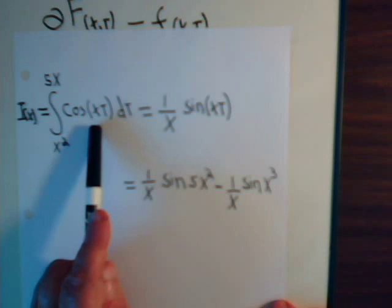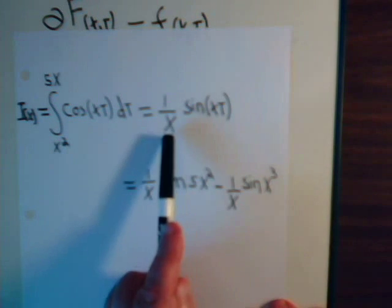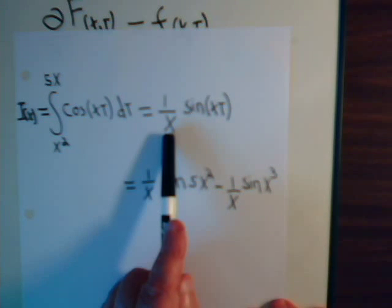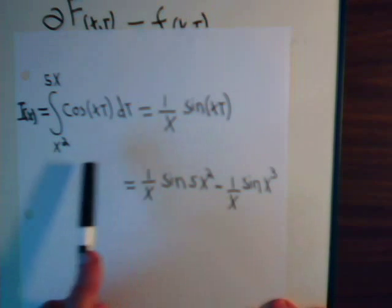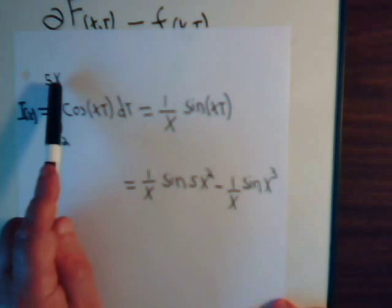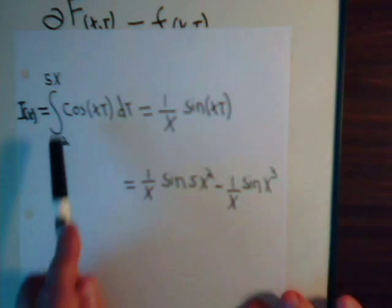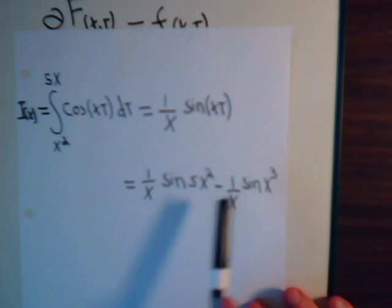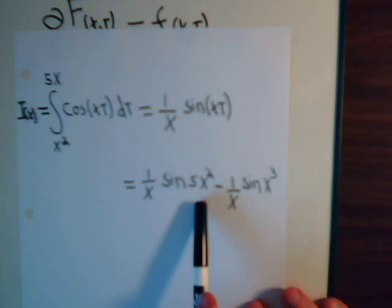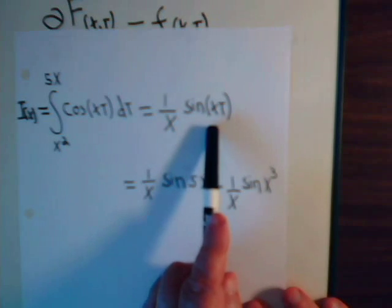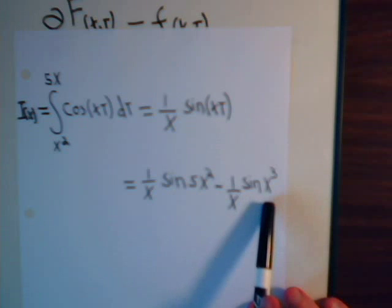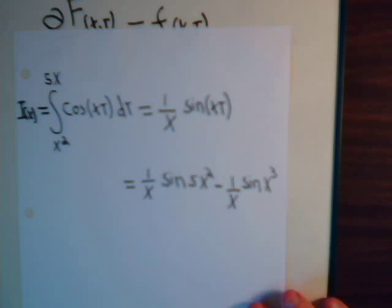We treat x as a constant when we integrate. This gives us one over x times the sine of xt. Now, the limits of t are not constants — they're some function of x. Here t equals 5x: putting 5x in we have 5x squared, then minus one over x times the sine of xt, which is now x squared. This gives x cubed. So it's a more complicated type of integral situation.